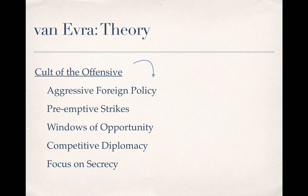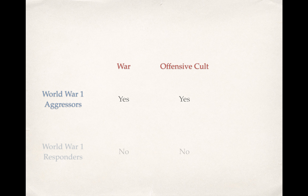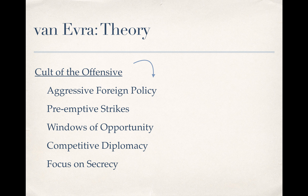Now, recall that in Van Evra's theory, the cult of the offensive is the independent variable. You might conceive of this as a yes or no question — is there a cult of the offensive in this particular country or not? Or you might see this variable as being continuous: in some countries the belief is relatively low, while in others the military is very convinced that the offensive is likely to carry the day. According to Van Evra, if the value of the independent variable is yes, then we see states more likely to engage in the behaviors on that list — and these behaviors lead states to view each other suspiciously and raise the risk of war.